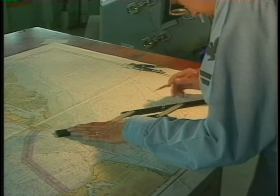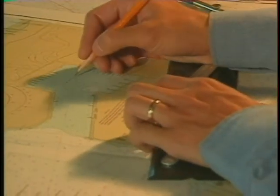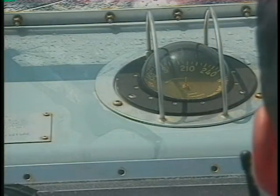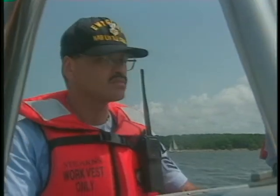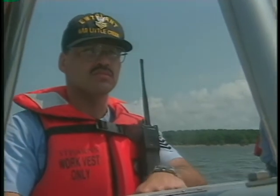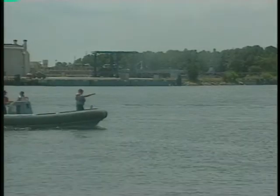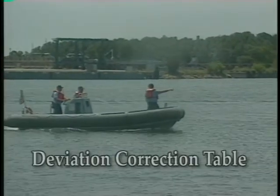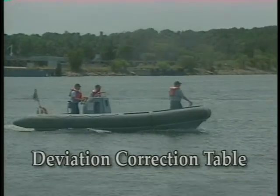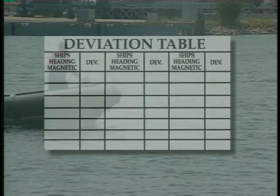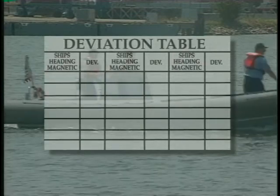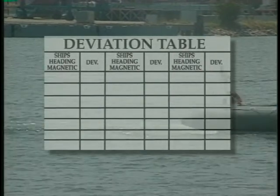Direction is measured on a chart with a pair of parallel rulers. You will use a magnetic compass in order to steer your boat, and you must learn to compute your magnetic course from the true course displayed on the chart. To determine the compass course, you need to have a deviation correction table for your boat. This correction, when added to the variation, will give you the total correction to apply to the true course, allowing you to lay out a true course on any harbor chart and determine the correct compass course.